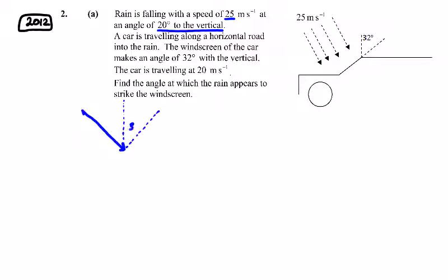This is an angle of 32°, so we bring this 32 in at the end of the question. So we have rain falling and it makes an angle of 20 degrees with the vertical, so the 20 is here.